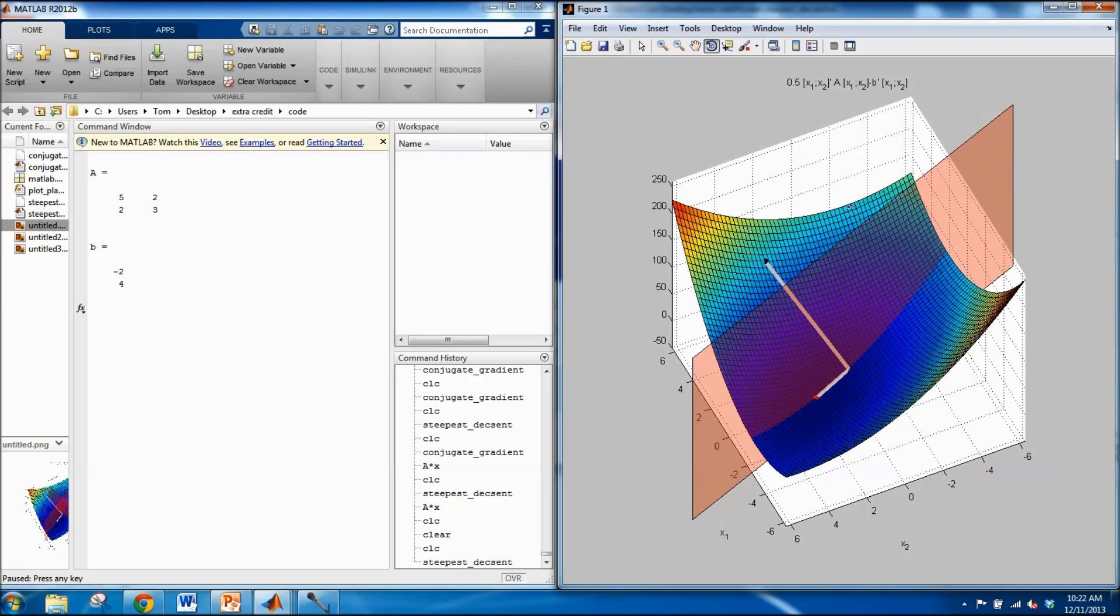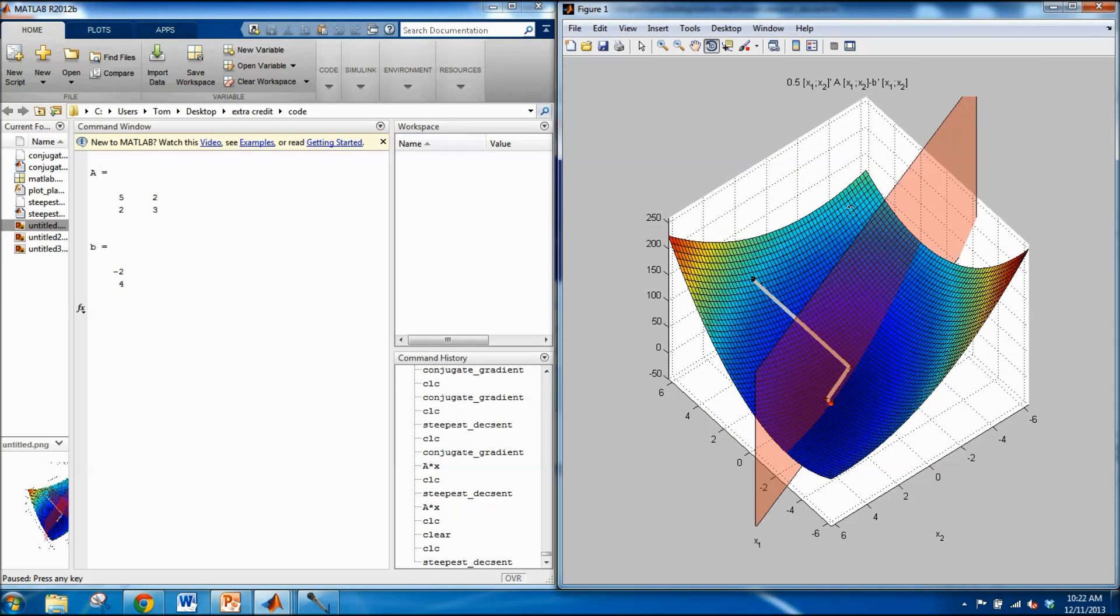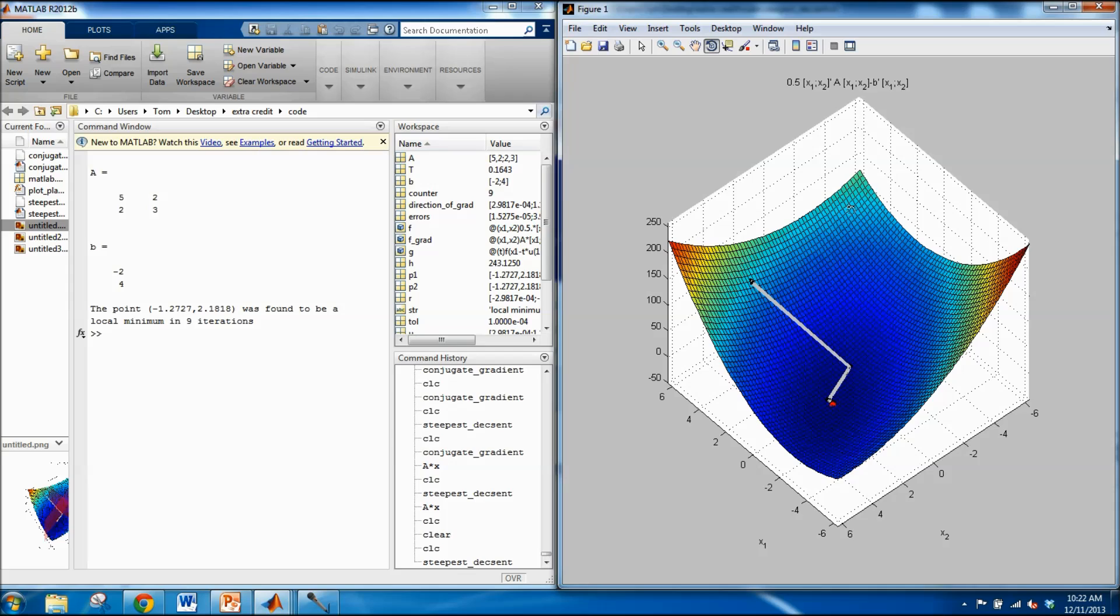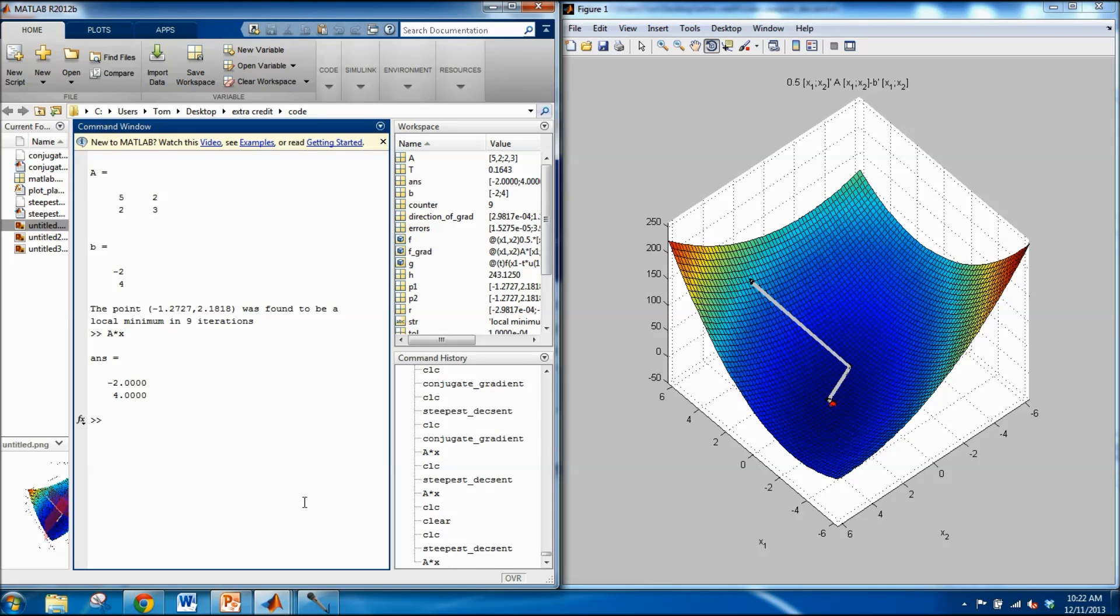This is repeated to some convergence criteria. Eventually, we see that it found a point minus 1.27 and 2.18 was found to be a local minimum at 9 iterations. To check that, we can do our A matrix times the x that it just calculated, and see that we get our B vector back, minus 2.14, which is what we want.